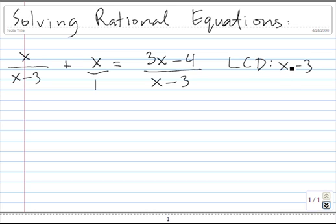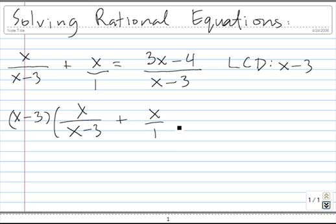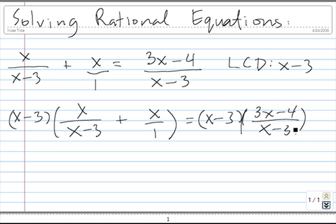Once we identify the least common denominator, we multiply both sides of the rational equation by the least common denominator. Now we distribute on both sides. Starting with this first piece: x minus 3 times x divided by x minus 3. You'll see that the x minus 3 on the top cancels with the x minus 3 on the bottom, so this product here is just x.